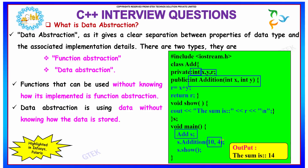He just has to know that if he passes two variables to addition, he would receive the sum as the output. So that is known as function and data abstraction.